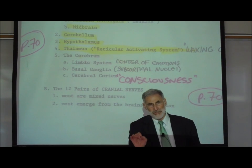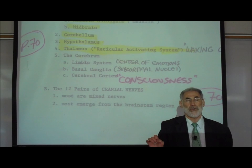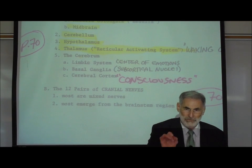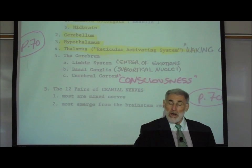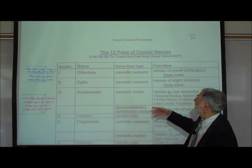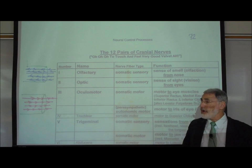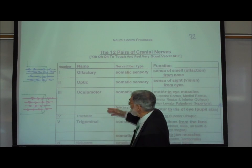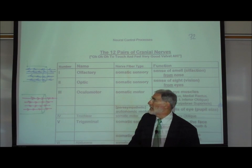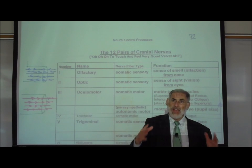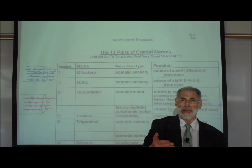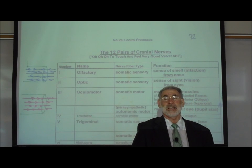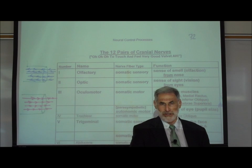By mixed nerves, we mean that inside these nerves are both sensory and motor nerve fibers. There are some cranial nerves that contain exclusively only sensory nerve fibers, and there are other cranial nerves that contain exclusively only motor nerve fibers. On page 72 is our chart describing the 12 pairs of cranial nerves, and for that information we will direct you to the next video lecture in the series, which reviews the 12 pairs of cranial nerves.